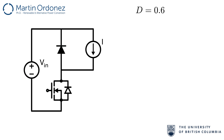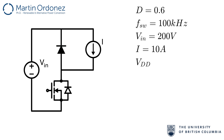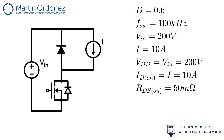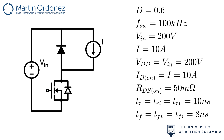Suppose that the duty cycle D of the MOSFET is 0.6, the switching frequency is 100 kHz, VIN is 200V, and I is 10A. Therefore, VDD — the voltage being blocked by the device when it is off — equals VIN, which is 200V, and ID_on equals I, so 10A. Consider RDS_on to be 50 mΩ, the rise time for both current and voltage to be 10 ns, and the fall time to be 8 ns, again for both current and voltage.